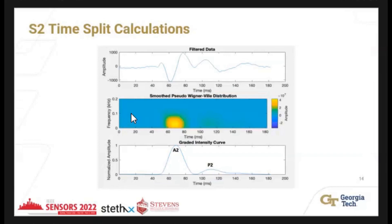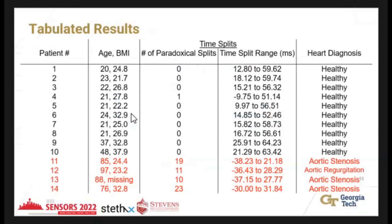This is an example of collected data: the top graph shows filtered data, and below is the Smoothed Pseudo Wigner-Ville distribution showing two main blobs — P2 is typically softer than A2. By calculating instantaneous frequency and instantaneous amplitude, we create a gradient intensity curve to determine where A2 and P2 peaks occur. From 14 subjects — 10 healthy with BMI ranging from 21 to approximately 40 — we were still able to capture the S2 sounds even in patients with more fatty tissue. Critically, we were able to capture paradoxical splitting in patients with aortic stenosis, detecting 10 to 23 counts of paradoxical splitting within a single minute of data.